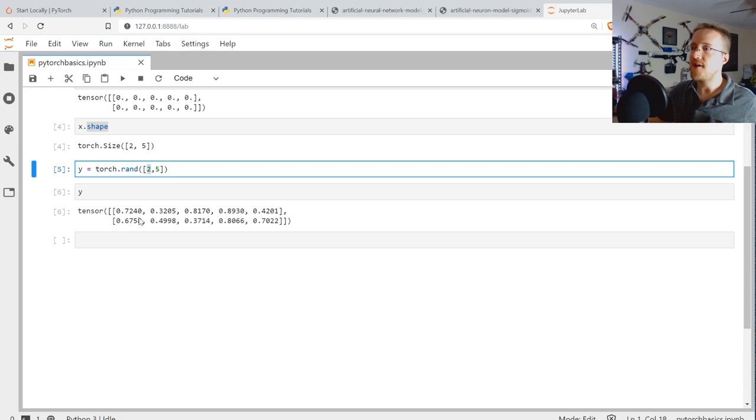So this is a 2 by 5. So let's say we want to do what's called a flatten operation. A 2 by 5 - in general, you're not going to be able to put a 2 by 5 into a neural network. So let's say it's an image and the image is 2 by 5 pixels. It's not going to be the case, but let's just say it was. The first thing you have to do before you feed this image through, let's say a basic neural network, is you have to flatten it so it would be a 1 by 10, right? Because there's 10 total elements.